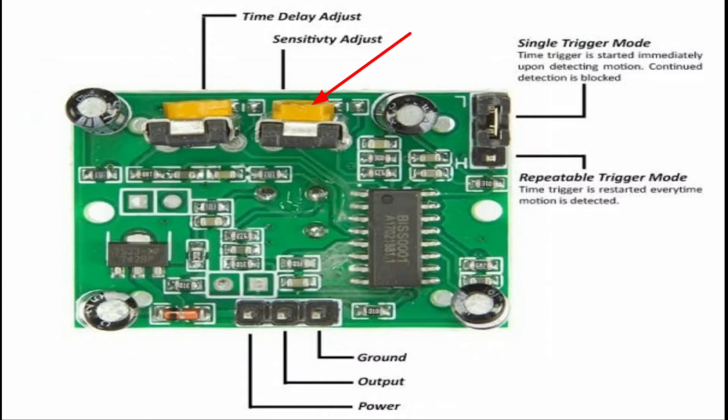From here you can adjust the sensitivity. By this, time delay. Here is the pins. By adding jumper here, you can activate single trigger mode. When motion is detected, it will trigger and continuous detection will be blocked. And by adding jumper here, you can activate repeatable trigger mode. That means it will trigger at every motion.